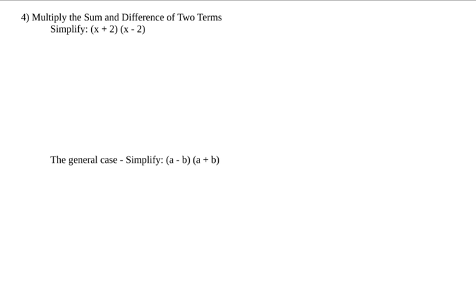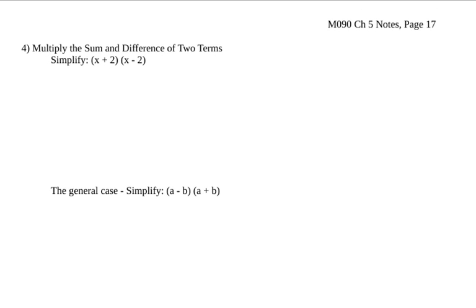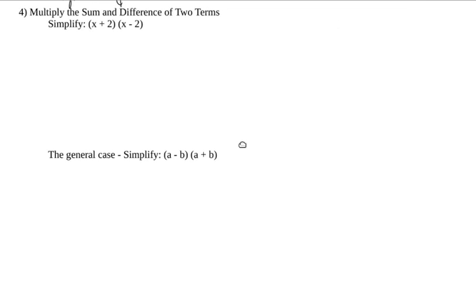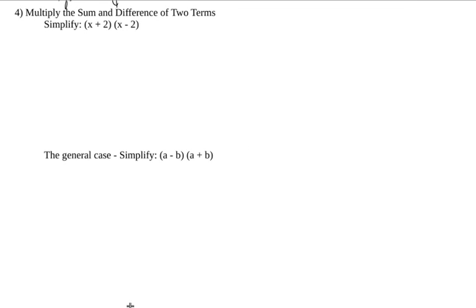Alright, so now what we're going to look at is sometimes what are called special products. These are just common patterns that you can see, so common in fact that it's worth memorizing what ends up happening. So if we're taking x plus 2 times x minus 2,